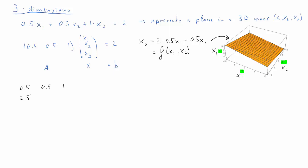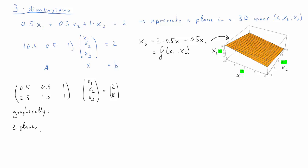Adding a second equation makes it a proper system: A times X equals B, where A is now a 2 by 3 matrix with two rows and three columns. The first row is identical to before, but now we add a second row. Graphically, this equation system is represented by two planes. If we have two planes in a three-dimensional space, there are three qualitatively possible outcomes.